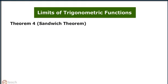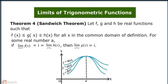Theorem 4, also known as the sandwich theorem. Let f, g, and h be real functions such that f(x) is less than equal to g(x) is less than equal to h(x) for all x in the common domain of definition. Then for sum real number a, if limit x tending to a f(x) equals L, which equals limit x tending to a g(x), then limit x tending to a h(x) equals to L.